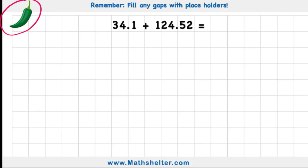We're going to start by looking at our green chili challenge. We can see we have an addition question and I'm going to be adding 34.1, or in other words 34.1, to 124.52, or in other words 124.52. And the method we're going to use today is column method.